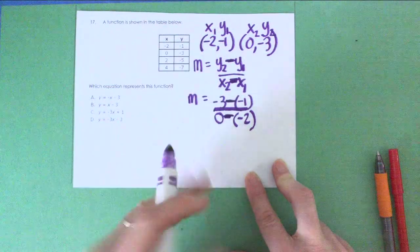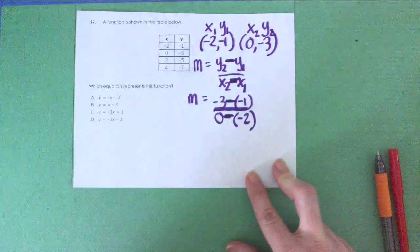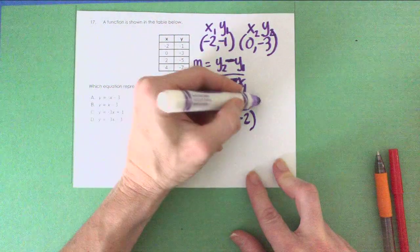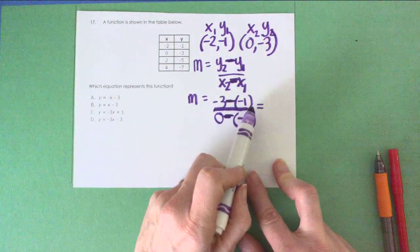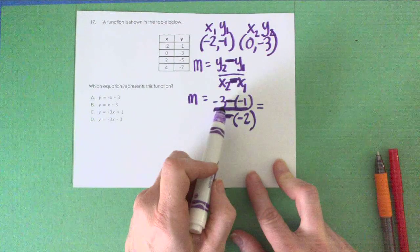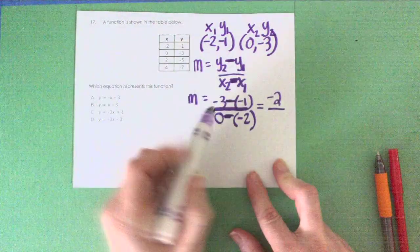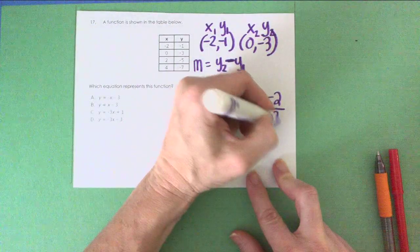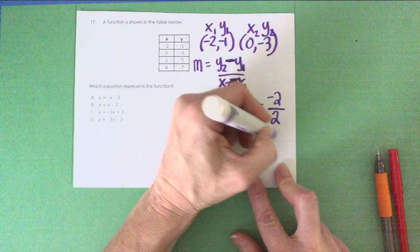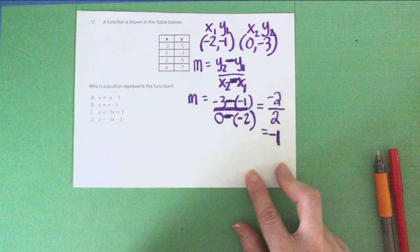So now we have negative 3 minus negative 1. That's the same thing as negative 3 plus 1, which is negative 2. 0 minus negative 2 is the same thing as 0 plus 2, which is 2. Divide them and you get negative 1.